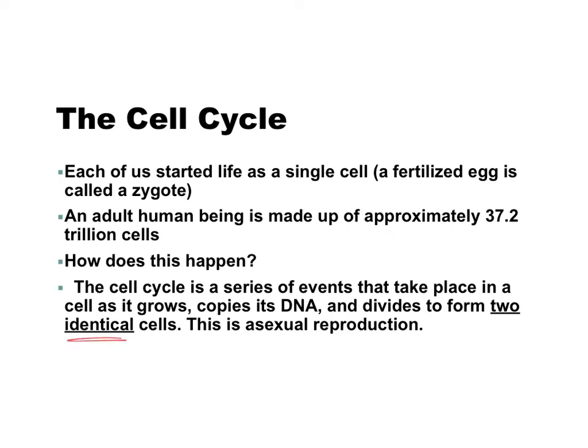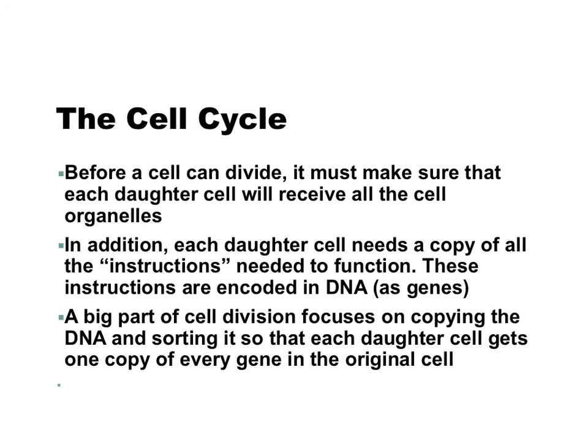The big thing you need to know is that you're making two brand new identical cells. Before a cell can divide, it must make sure that each daughter cell will receive all the cell organelles. Daughter cell is just the name of the two new cells produced throughout the cell cycle. Each daughter cell also needs a copy of all the instructions needed to function, and these instructions are encoded in DNA as genes. A big part of cell division focuses on copying the DNA and sorting it so that each daughter cell gets one copy of every gene in the original cell.